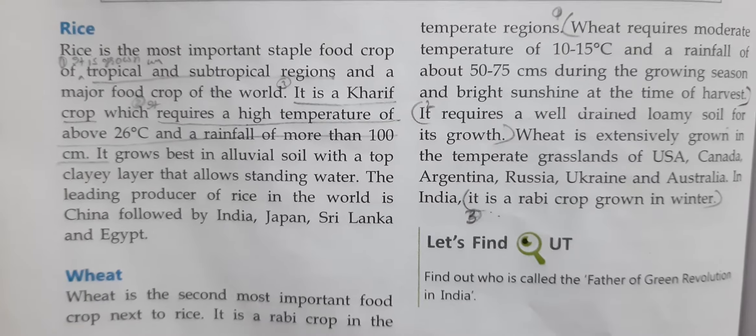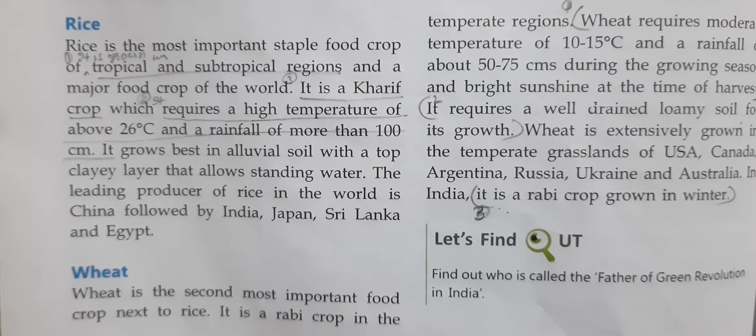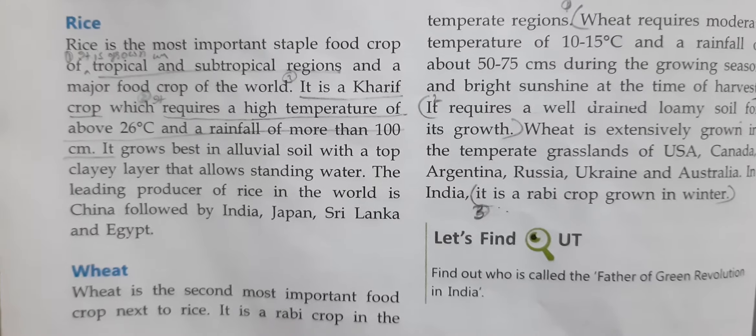Rice is a kharif crop which requires a high temperature of above 26 degrees Celsius and a rainfall of more than 100 centimeters. It grows best in alluvial soil with a top clay layer that allows standing water. The leading producer of rice in the world is China, followed by India, Japan, Sri Lanka, and Egypt.